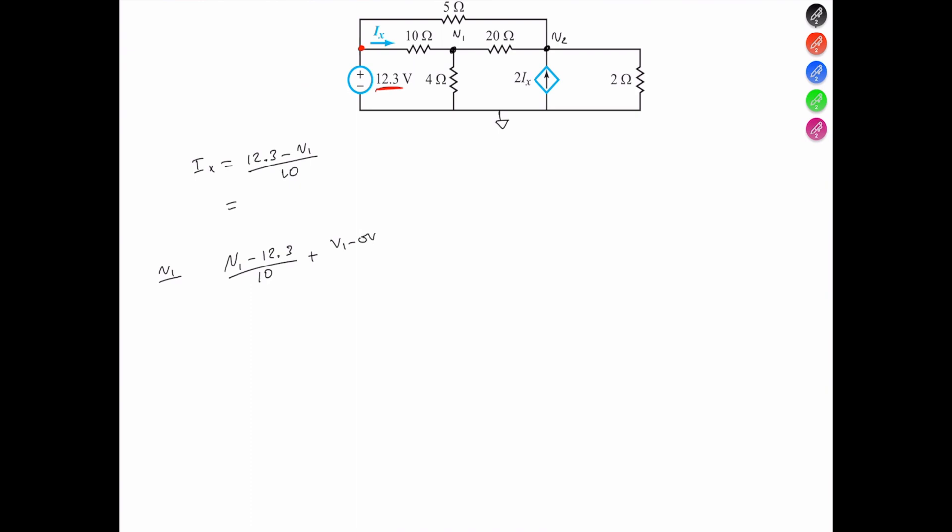And you can say V1 minus 0 volts, because ground is 0 volts, all over 4, plus V1 with reference to V2, so that's minus V2, all over that 20 ohms, and that's equal to 0.